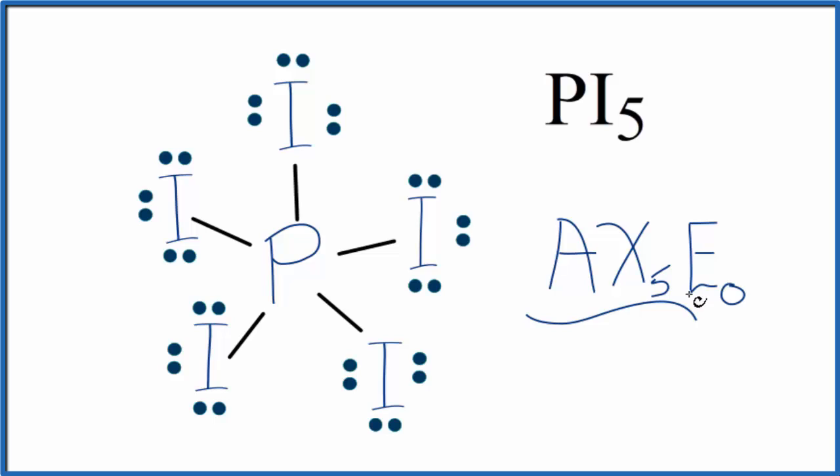This is Dr. B with the Lewis structure, bond angles, and molecular geometry for PI5, phosphorus pentaiodide. Thanks for watching.